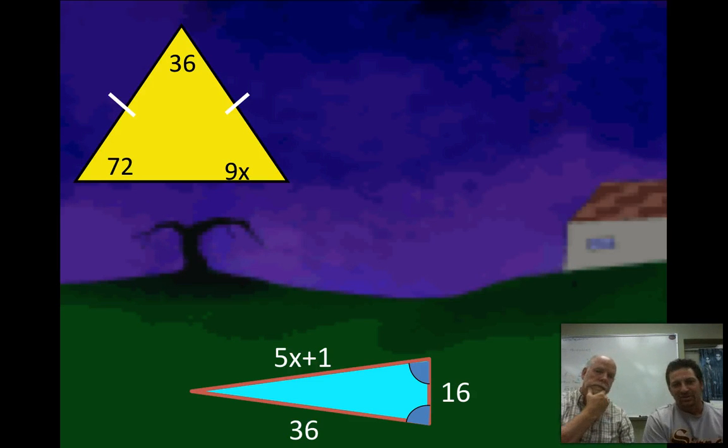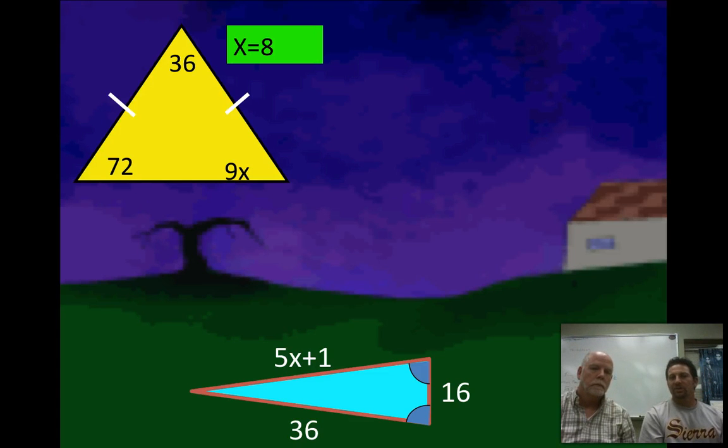So right here we got to figure out what x is. Well if you see that the triangle is isosceles by the hash marks there, you just got to remember that the place where the two legs meet is the vertex. And so that's at that 36 degrees. So that means that 72 and 9x are both base angles. So they're congruent based on the theorem we just learned. So all I got to do is say 9x equals 72, and so x equals 8.